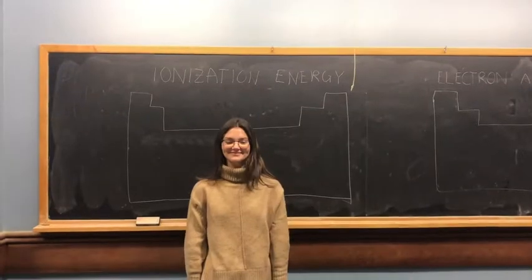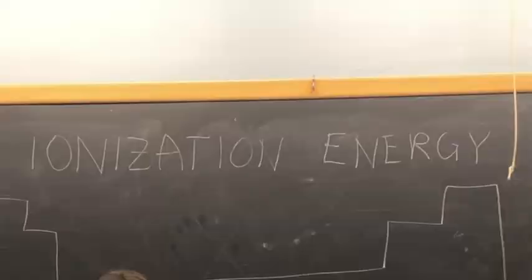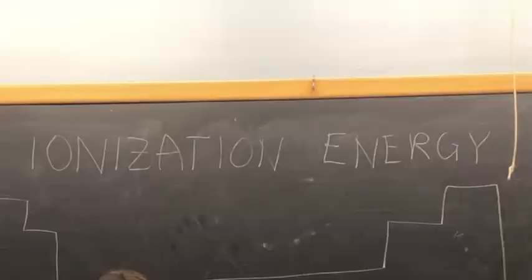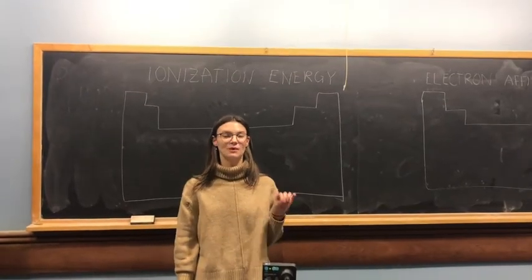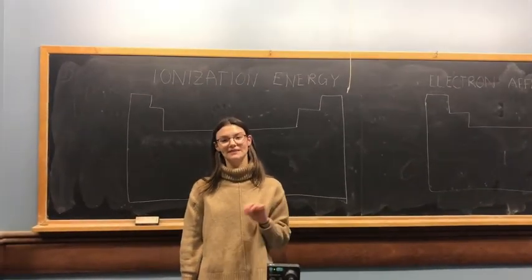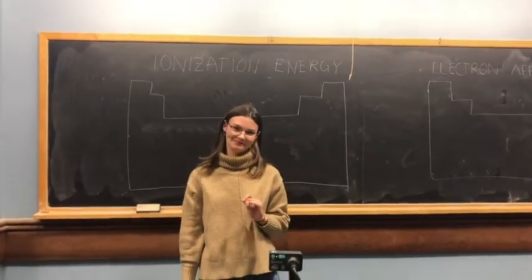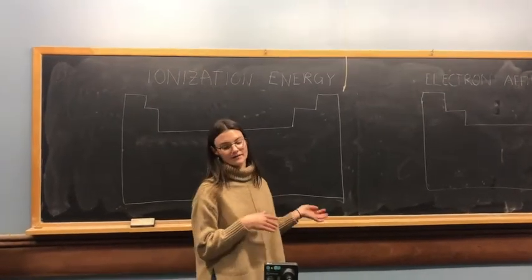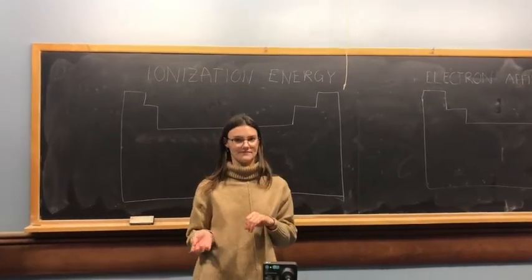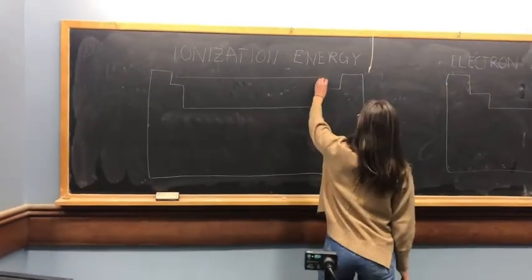Another trend vital to chemistry is ionization energy — the energy needed to remove one mole of electrons from one mole of gas-phase atoms or ions in their ground state, measured in kilojoules per mole. The lowest ionization energy requires the least energy to remove an electron. Ionization energy increases from left to right and from bottom to top on the periodic table.